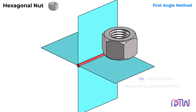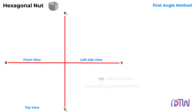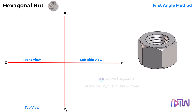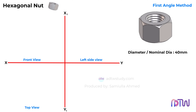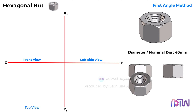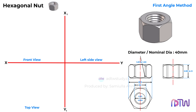With this understanding, we can start drawing. We will first start with drawing a hexagonal nut. Mostly, to draw the nut, the diameter of the bolt is given. Or sometimes it is asked to be drawn freehand. To do so, we will consider the diameter of the bolt to be equal to 40mm. These are the general dimensions for a standard hexagonal nut.